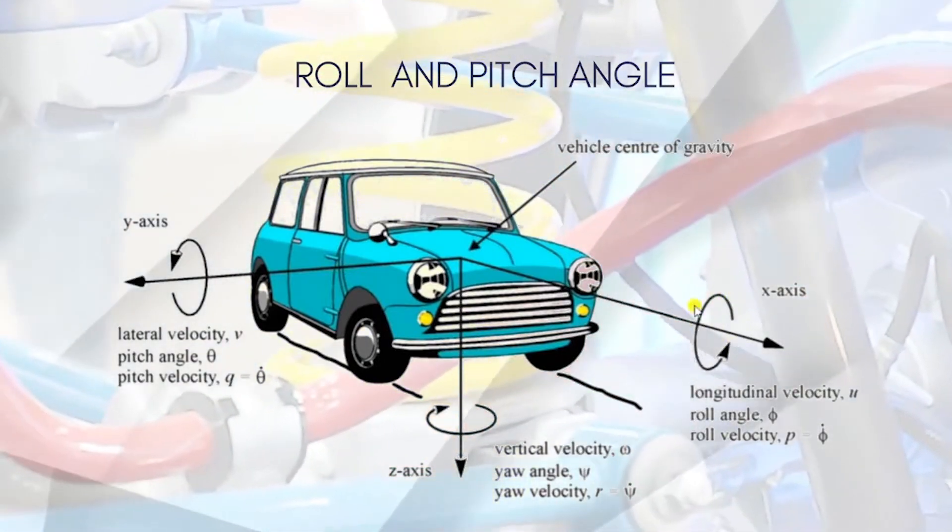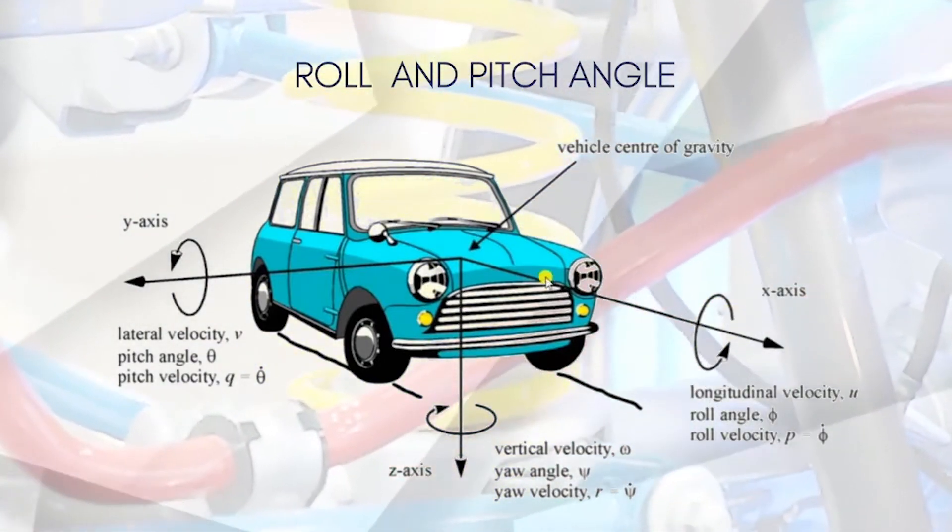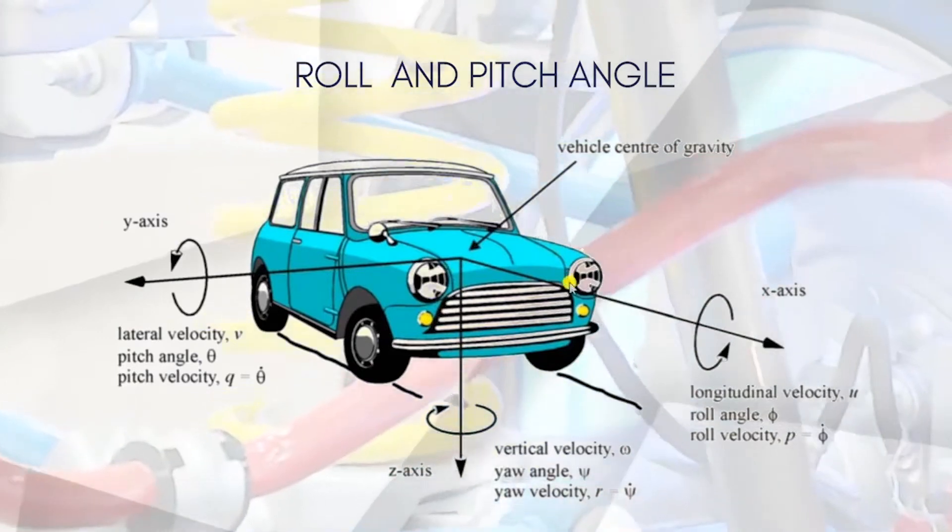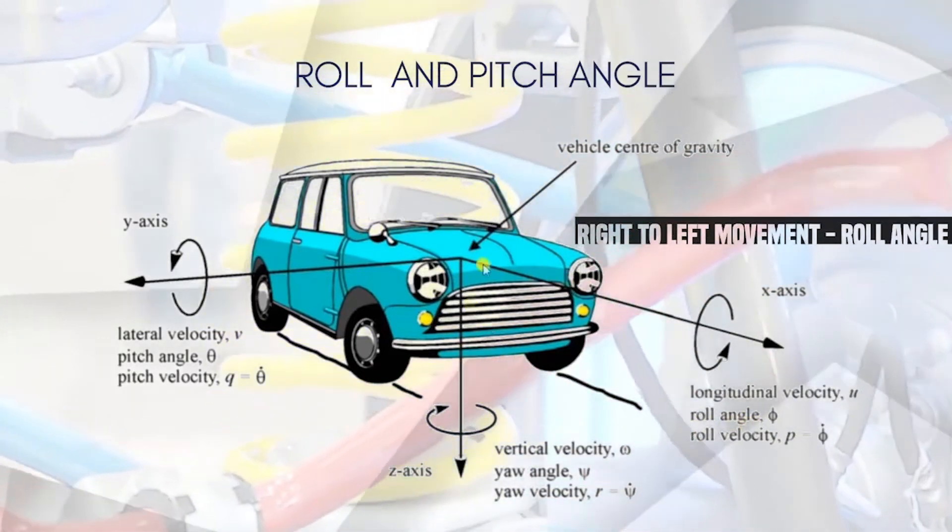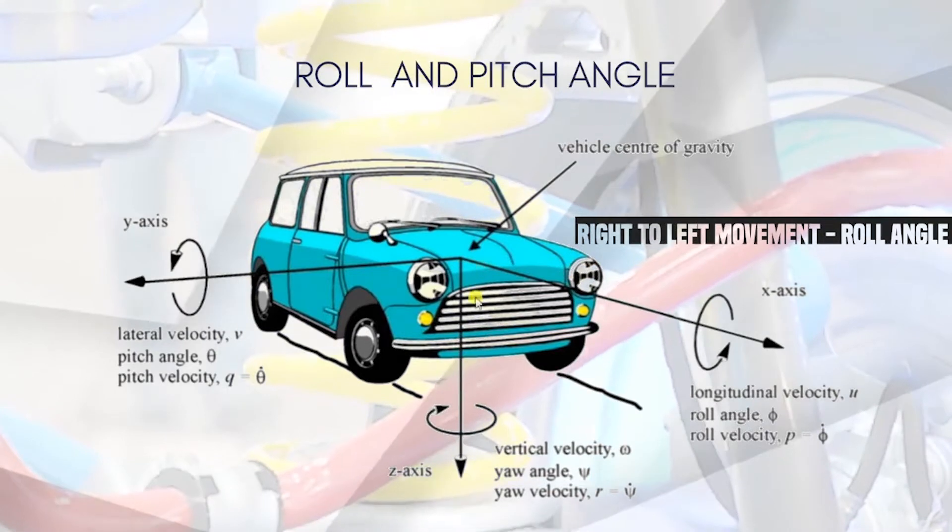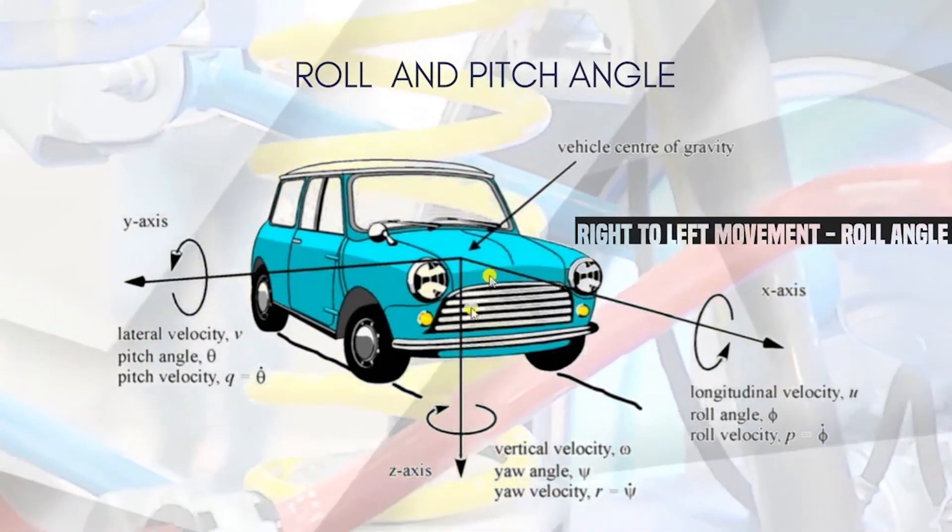If the car tends to rotate along the x-axis, if it moves from right to left, this is called the roll angle. This movement from right to left of the body is called the roll angle.